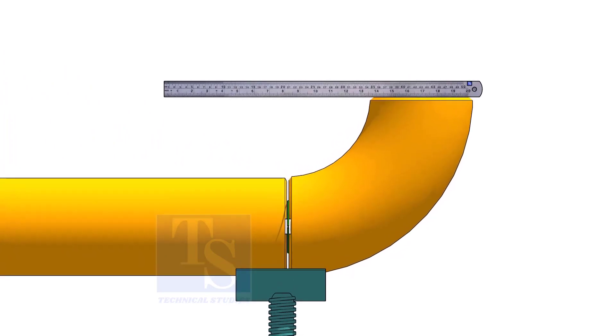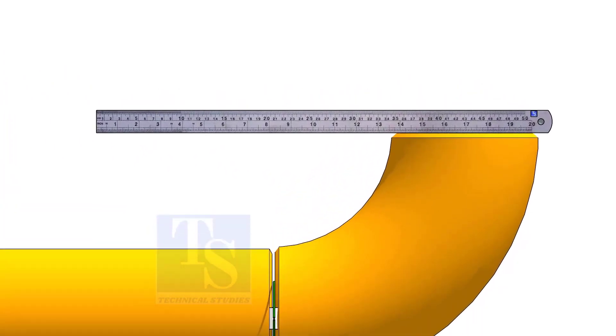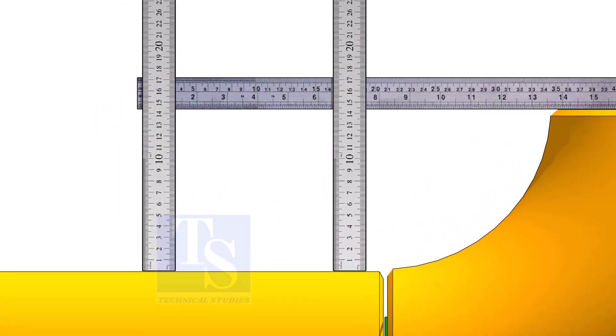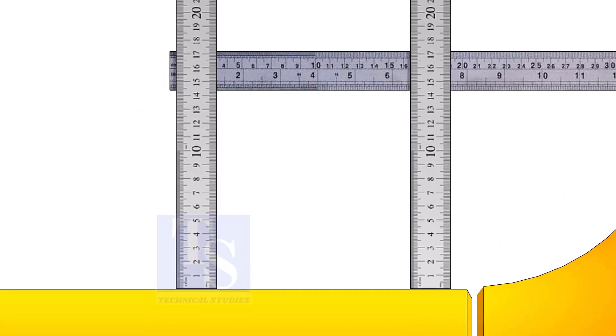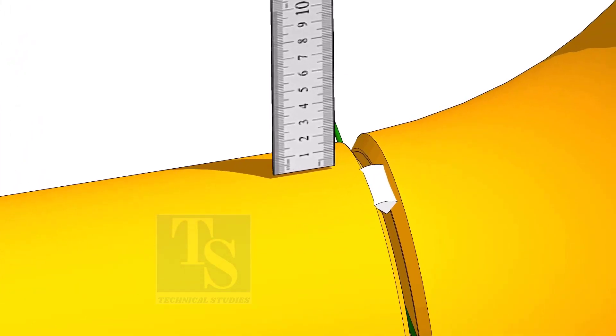Hold a scale on the top of the elbow and measure the distance. Tack weld on the top and bottom side of the joint.